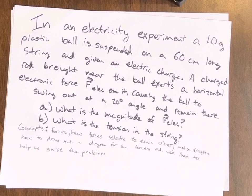A charged rod brought near the ball exerts a horizontal electric force, F-electric, on it, causing the ball to swing out at a 20-degree angle and remain there. What is the magnitude of F-electric and what is the tension in the string?